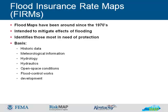Flood insurance rate maps, or FIRMs, are the primary tool for governments to mitigate the effects of flooding in their communities. They are intended to reduce future damage and provide protection for property owners through an insurance mechanism. Maps show areas subject to flooding based on historic, meteorological, hydrologic, and hydraulic data, as well as open space conditions, flood control works, and community development.